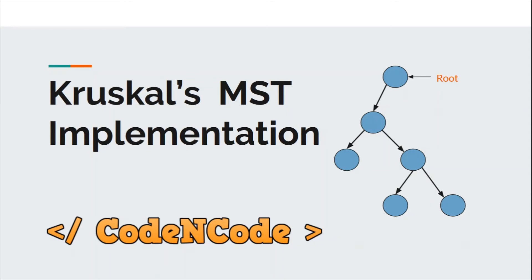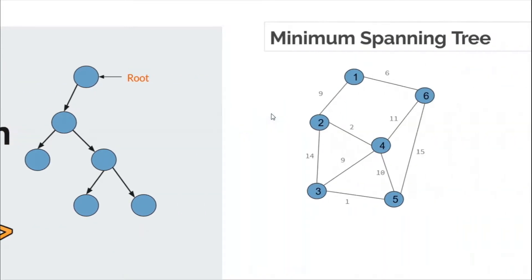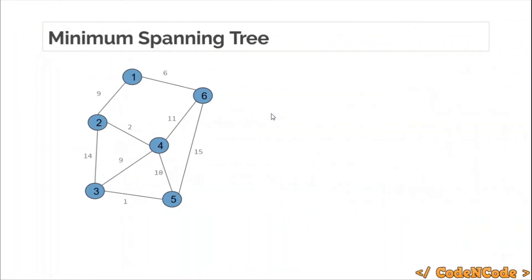Hello guys, this is Code and Code and this is the second lecture of this graph theory series part two. In this lecture we are going to implement and solve a problem taken from HackerEarth, and we are going to implement Kruskal's algorithm to find the MST.